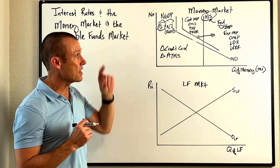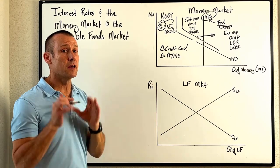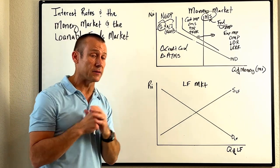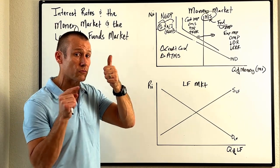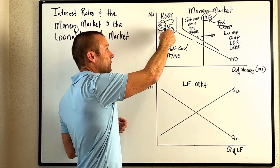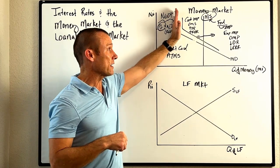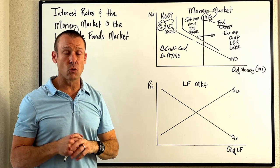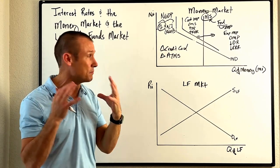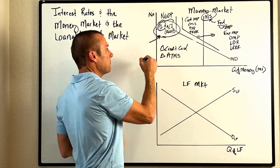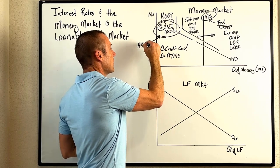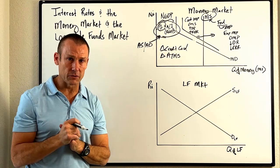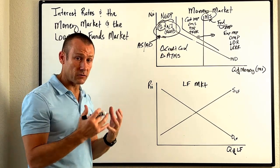One more addendum: if you get a shift in the AD curve and are asked what happens to the interest rate, use the money market. Shifting AD right in the AS-AD model raises both the price level and real GDP. That increases transaction demand for money, shifts the money demand curve right, and the interest rate goes up.